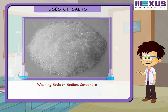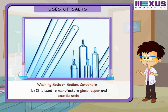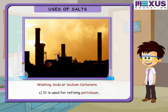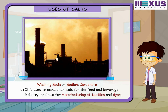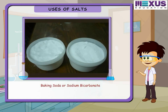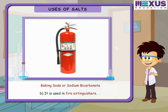Washing soda, or sodium carbonate, is used for washing clothes and for manufacturing glass, paper, and caustic soda. It is also used for refining petroleum and making chemicals for the food, beverage, textile, and dye industries. Baking soda, or sodium bicarbonate, is used as a baking powder — the released carbon dioxide gas helps puff up cakes. It is used in fire extinguishers and also as a mild antiseptic and antacid.